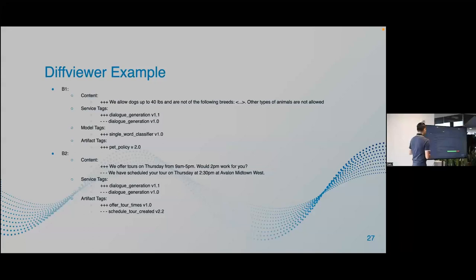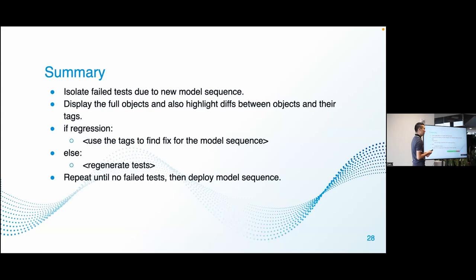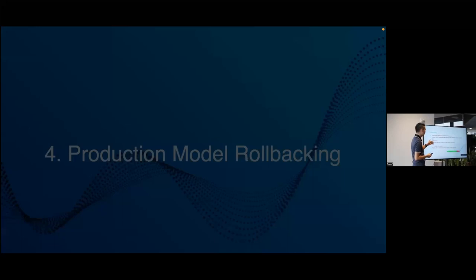To summarize: isolate the failed tests, display the full objects, display just the diffs, figure out if there's a regression, repeat until no failed tests, then deploy your model sequence.